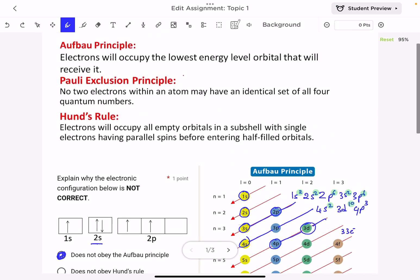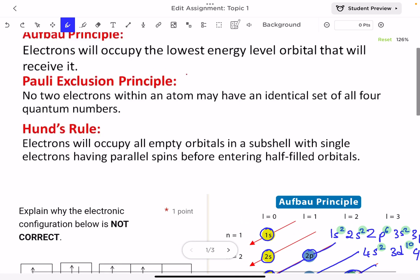Now the next rule is the Pauli exclusion principle. It says that no two electrons within an atom may have an identical set of all four quantum numbers. And this, in other words, means that in an orbital, electrons must have opposite spins.